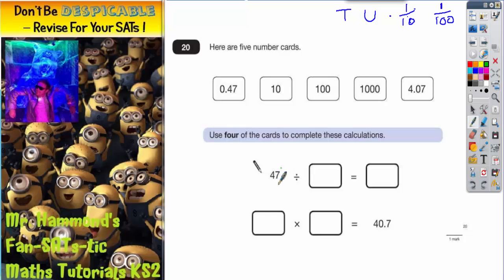If we take a look at the first question here, we've got 47 divided by something equals something. Well, if we look at our number cards, we've got 4 and 7 together here and we've also got 4 and 7 together here. So I'm going to choose this card to be my answer, 0.47, because I know that I can get from this to this because the 4 and the 7 are together.